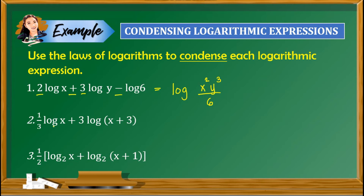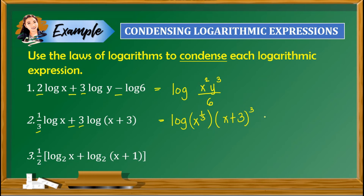Item number 2: one-third logarithm of x plus 3 logarithm of (x plus 3). We have addition, so we apply the law of a product. The coefficients 1/3 and 3 become exponents: x raised to 1/3 and (x plus 3) raised to 3. We remove the fractional exponent by rewriting in radical form, giving logarithm of the cube root of x times (x plus 3) cubed.